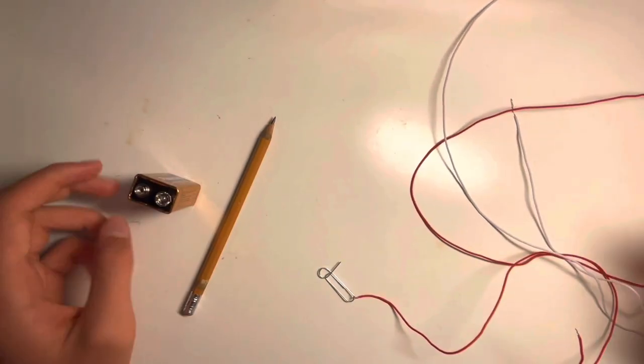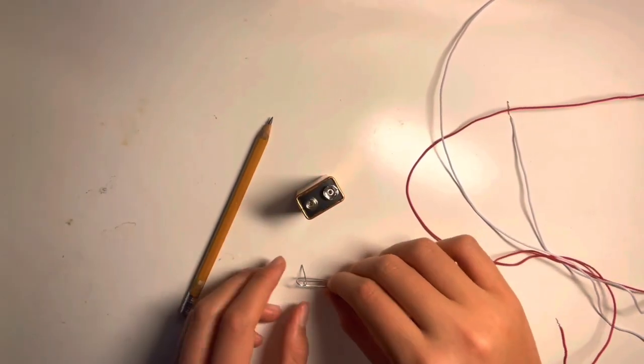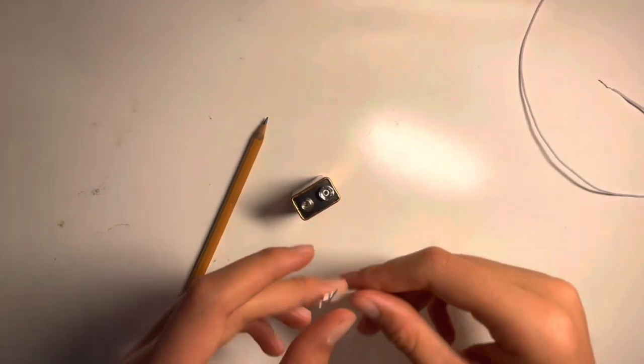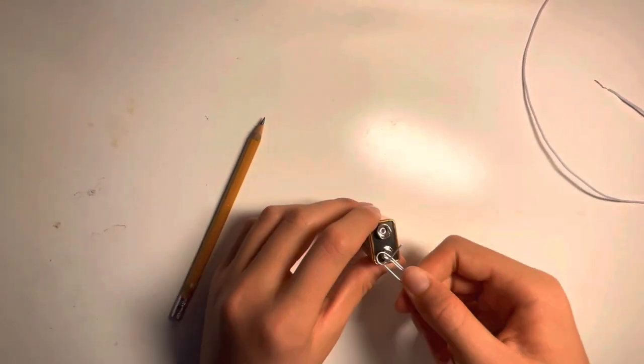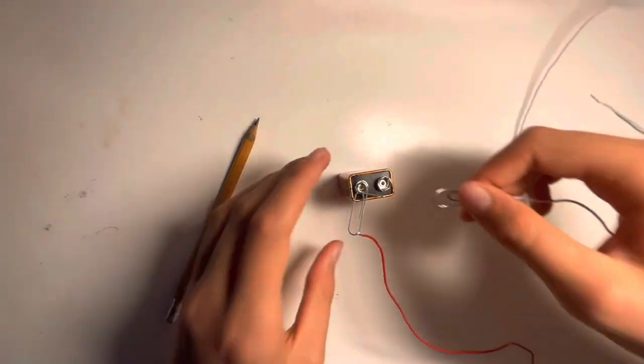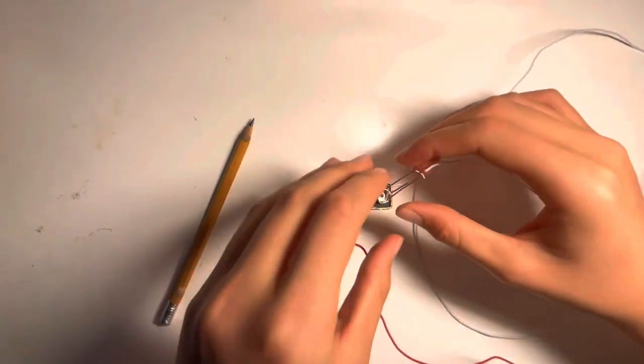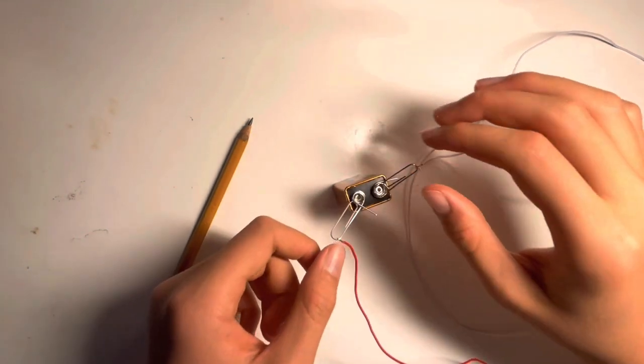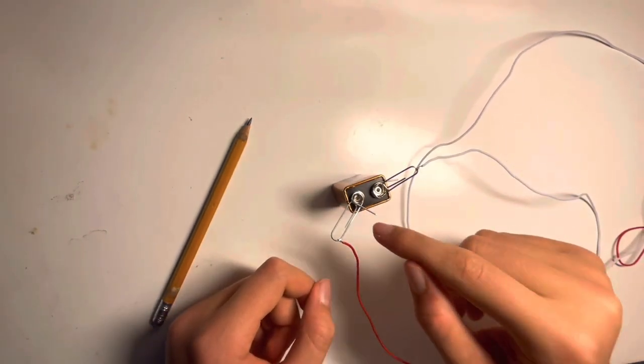Okay, to begin what you want to do is simply connect the wires to your battery like this. You need to make sure that the two paper clips are not touching, otherwise the circuit will be here.